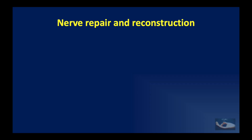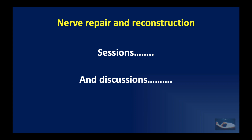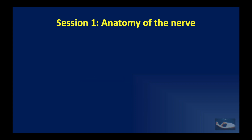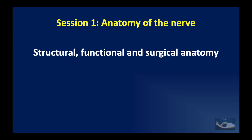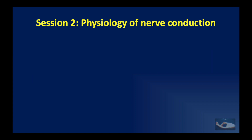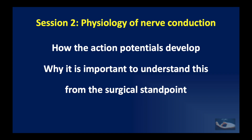We shall now see under nerve repair and reconstruction the different sessions and the discussions in each session. We shall be starting with the basics — session 1 on anatomy of the nerve, where we will discuss not only the structural anatomy but also the functional and surgical anatomy, followed by the physiology of nerve conduction in session 2, where we will discuss how action potentials develop and why it is important to understand this from the surgical standpoint.